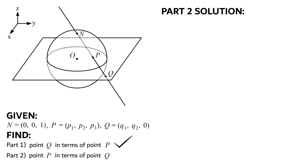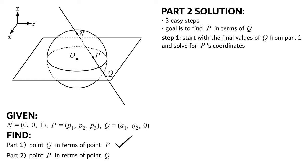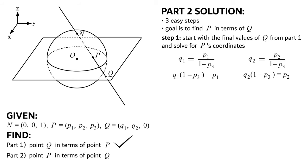Let's now proceed to part 2, where we'll be finding the inverse stereographic projection function that maps point q to point p. I've broken up part 2 into three easy steps. Our goal will be to get p in terms of q. Our first step is to start with the final values of q from part 1 and solve for p's coordinates. From part 1, we got q1 equals p1 over (1 minus p3) and q2 equals p2 over (1 minus p3). After cross multiplying, we have p1 equals q1 times (1 minus p3), and p2 equals q2 times (1 minus p3). We'll write that p3 equals p3 because we don't know more about it than that.